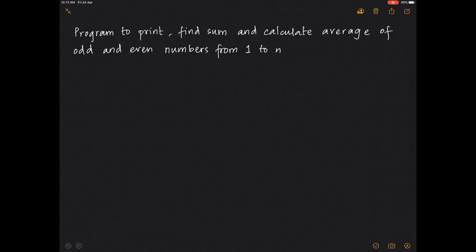Let's look at a program to do some operations of printing, finding sum, and calculating the average of odd and even numbers from 1 to n. We've already done the program of finding if a number is odd or even. To check whether a number n is odd or even, use the condition: if n modulus 2 equals 0, it is even; otherwise it is odd.